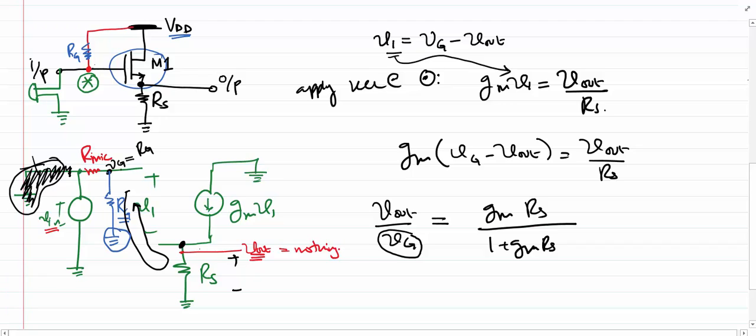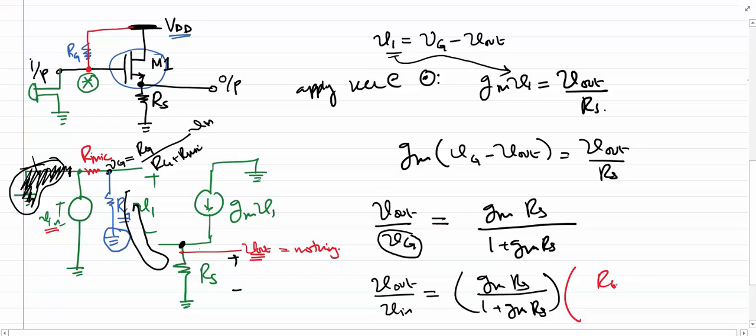Now we want to find Vg. We can use a voltage divider on this node, which gives us Rg over Rg plus Rm times Vin. If I put this value in the equation, I'll get Vout over Vin equals Gm*Rs over 1 plus Gm*Rs times Rg over Rg plus Rm.